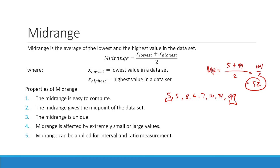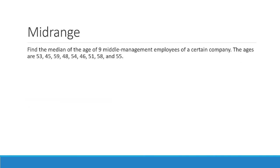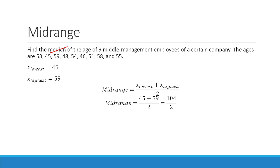Mid-range can be applied for interval and ratio measurement. It will not work for ordinal and nominal level of measurement. Using the same example of 9 middle management employees: for mid-range, we get the lowest (45) and highest (59): 45 + 59 = 104, divided by 2 equals 52. So the mid-range age is 52.